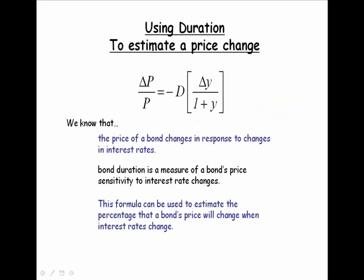We can use bond duration to estimate the change in the value of a bond. What do we know? Well, we know that a bond's value is very sensitive to interest rate changes. We also know that bond duration is a measure of a bond's price sensitivity to interest rate changes. So this formula can be used. We can use bond duration to estimate the percentage that a bond's price will change when interest rates change.